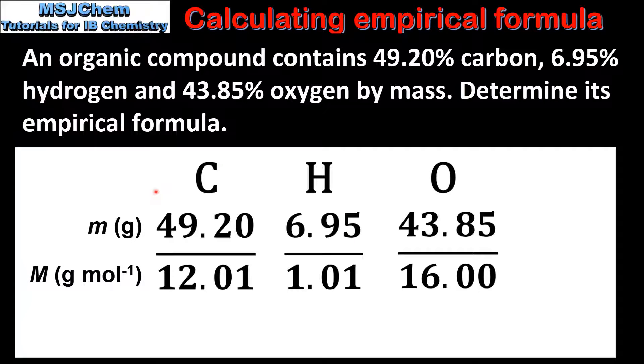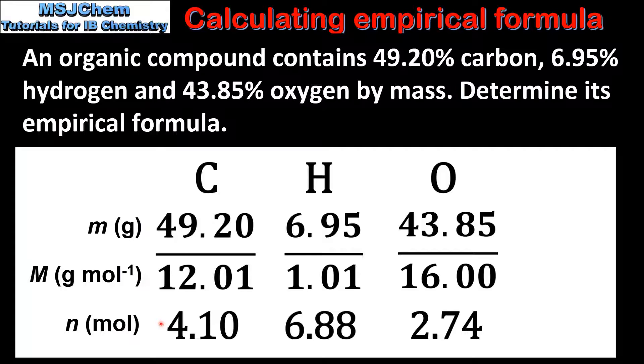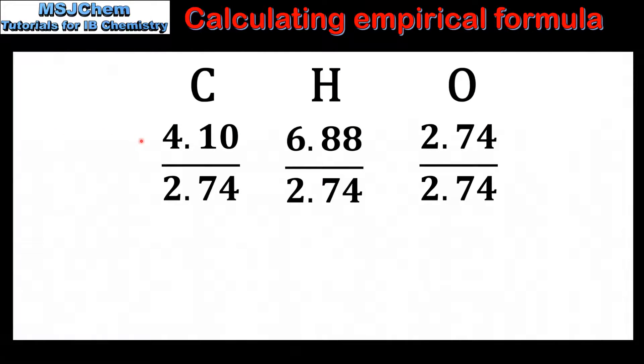So just like in the previous example we'll treat these percentages as masses. So we have 49.20 grams of carbon, 6.95 grams of hydrogen, and 43.85 grams of oxygen. We then convert to amount in moles by dividing by the molar mass. Which gives us 4.10 moles of carbon, 6.88 moles of hydrogen, and 2.74 moles of oxygen.